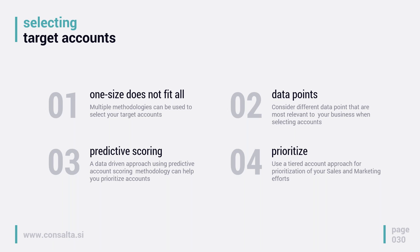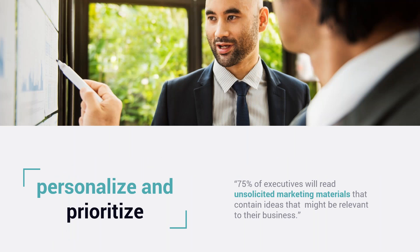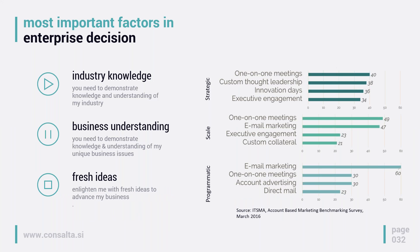How to personalize and prioritize. 75% of executives will read unsolicited marketing materials that contain ideas that might be relevant to their business. What do business executives expect from us if we want them to open our content and gain their attention? Industry knowledge — you need to demonstrate knowledge and understanding of their industry. Business understanding — you need to demonstrate knowledge and understanding of their unique business issues. And fresh ideas — ideas that could actually advance their business.